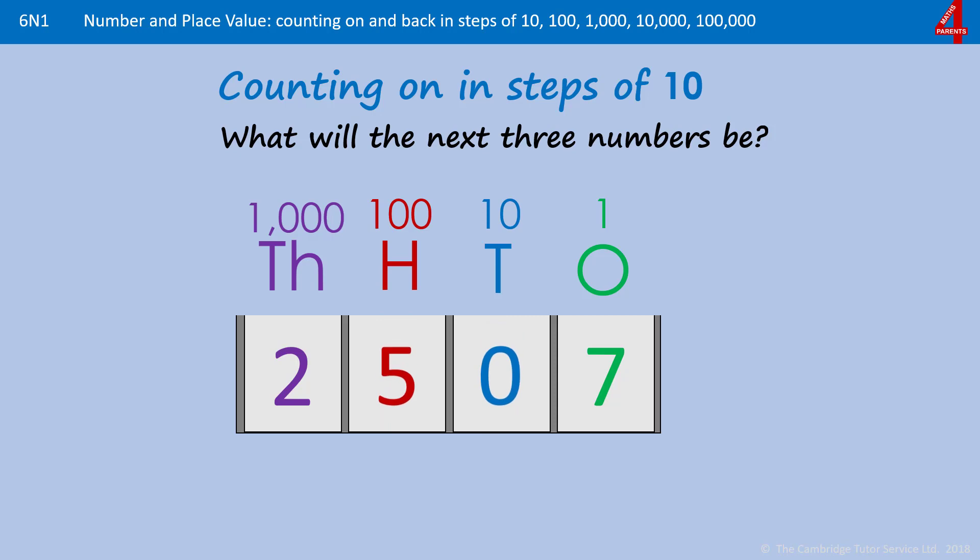So now we have 2507 and if we add on another 10, it's just a digit in the tens column that will change and that will go up to one.